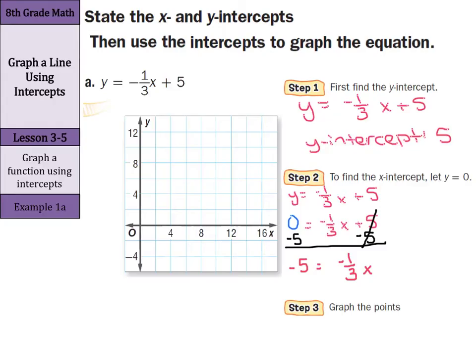And remember, to simplify this type of equation, we can multiply by the reciprocal, which is a negative 3 over 1, or just negative 3. So our answer here, negative 3 times negative 5 is 15 equals x.